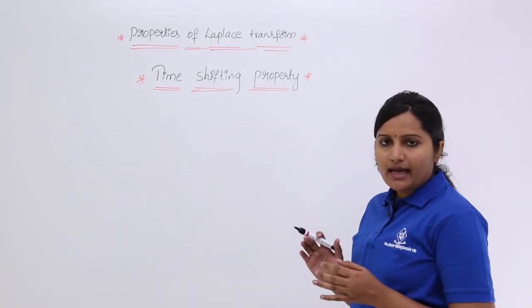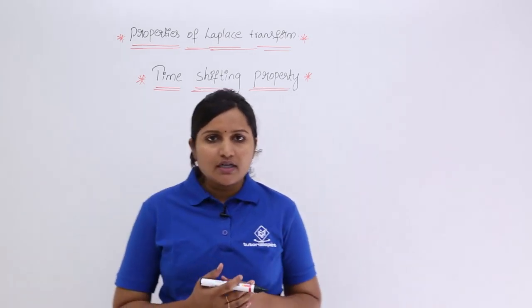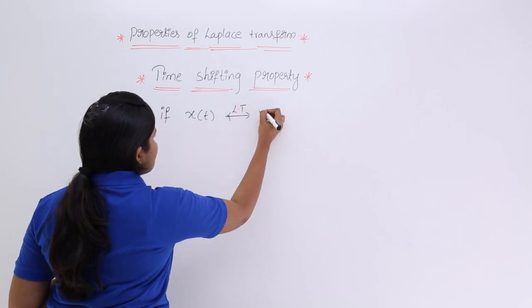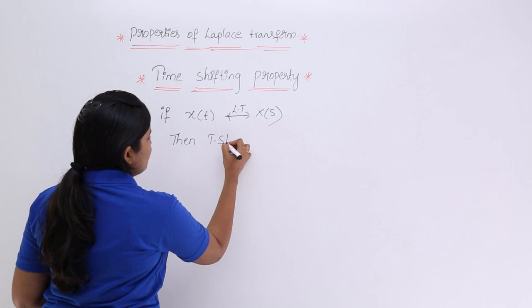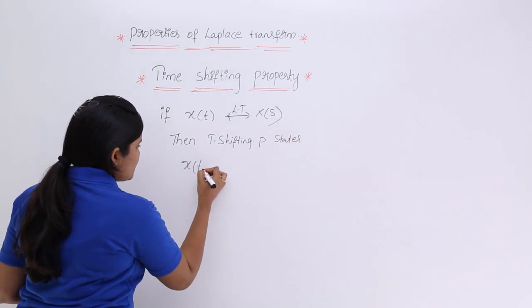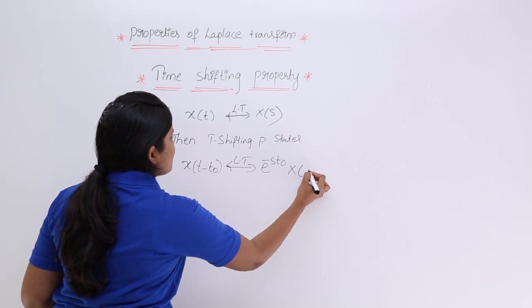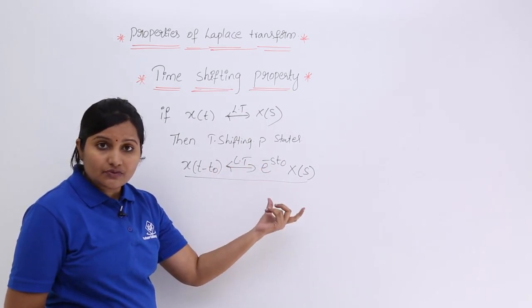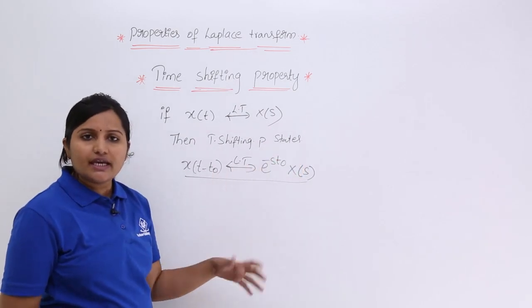The time shifting property in Laplace transform states what is the spectrum of the signal after shifting in time. If X of T is a signal with Laplace transform X of S, then the time shifting property states that X of T minus T naught — the shifted version of X of T — has Laplace transform E power minus S T naught into X of S, where T naught is the delay or shift in the signal.